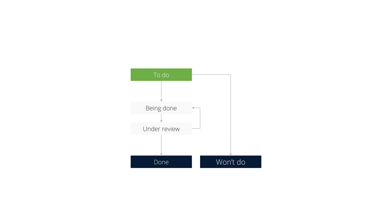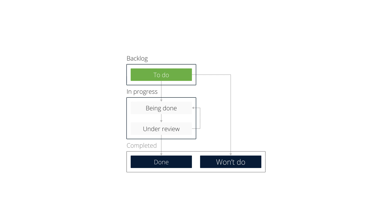In our scenario we will have the following states: Backlog, In Progress, and Completed. The Backlog state will have the To Do activity, the In Progress state will have the Being Done and Under Review activities, and the Completed state will have the Done and Won't Do activities.